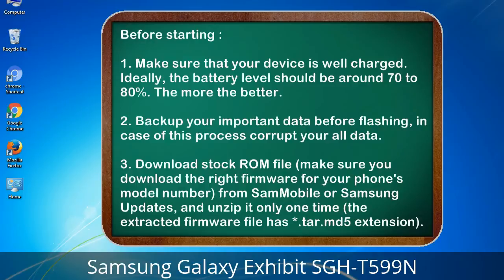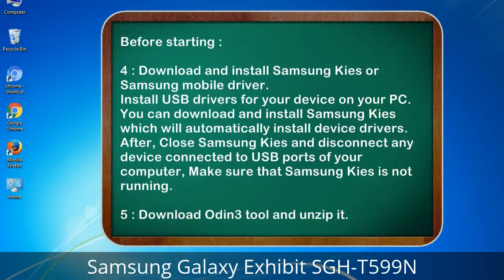Make sure you download the right firmware for your phone's model number from Sammobile or Samsung Updates, and unzip it only one time. The extracted firmware file has a *.tar.md5 extension. 4. Download and install Samsung Kies or Samsung mobile driver to install USB drivers for your device on your PC. Samsung Kies will automatically install device drivers. After installation, close Samsung Kies and disconnect any device connected to USB ports, making sure Kies is not running. 5. Download Odin 3 tool and unzip it.